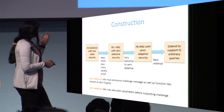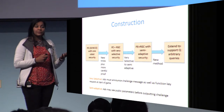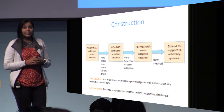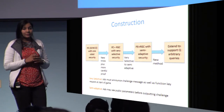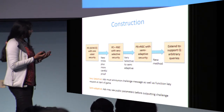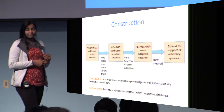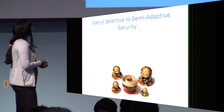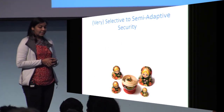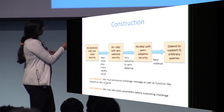At a high level, we start with the predicate encryption scheme of GVW15, add new tricks and a more careful proof to get a scheme subsuming predicate encryption and reusable garbled circuits, but in a very weak security game called 'very selective security.' In very selective security, the adversary must announce the challenge messages and the function key in the very first step, before even seeing the public parameters. In semi-adaptive security, the attacker may see the public parameters before announcing the challenge ciphertext.